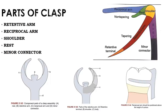The parts of the clasp can be rigid or flexible. Flexible components are designed below the height of contour so they can engage the undercut and flex to pass through the height of contour without much effort. In a conventional clasp, the tip of the retentive arm is the only flexible component.